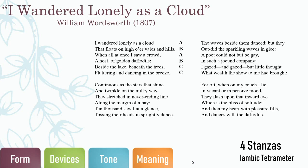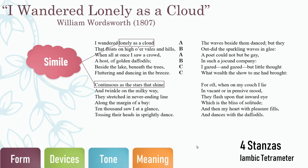Now let's analyze the literary devices in the poem. It's not enough to just identify the devices — we have to figure out the effect they have on the poem itself. The first thing that stands out is a simile in the first line: the speaker compares himself to a cloud. This shows a slight sad, melancholy tone in the beginning. The speaker seems like a lone observer who's just floating around and watching the world passively.